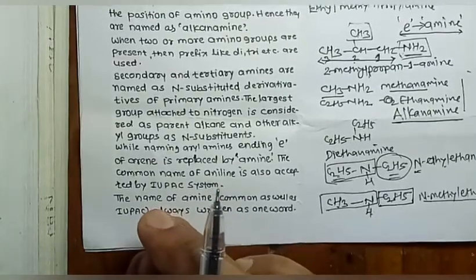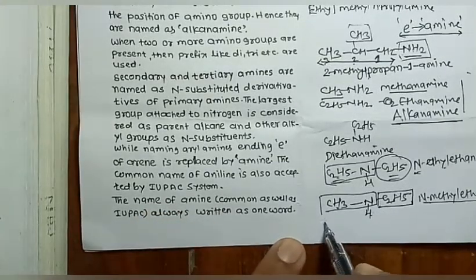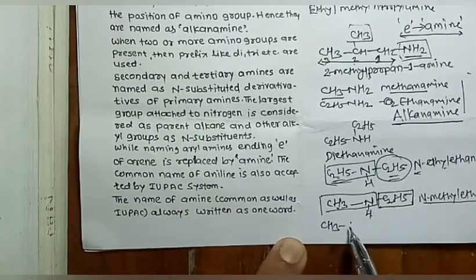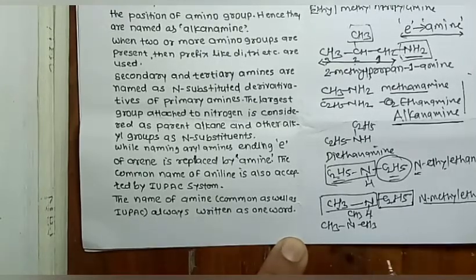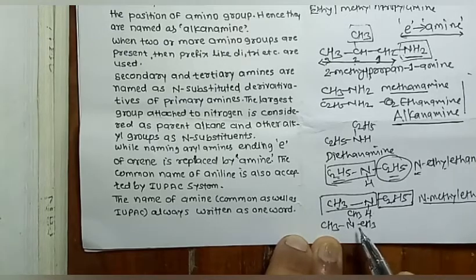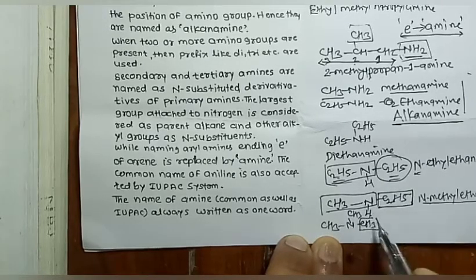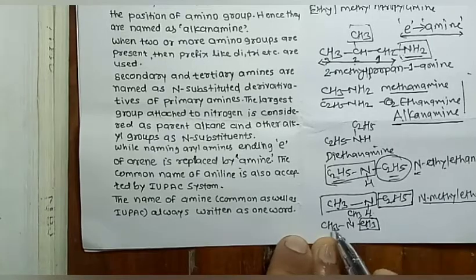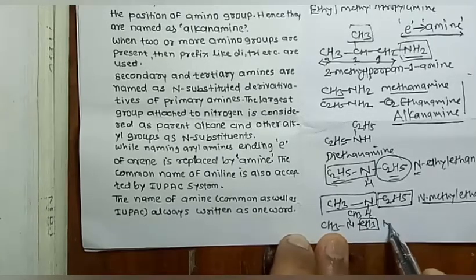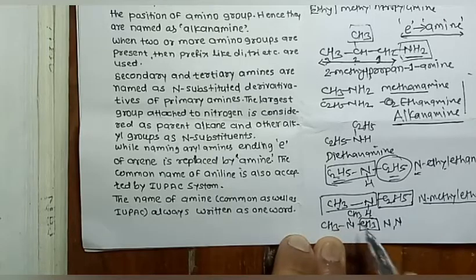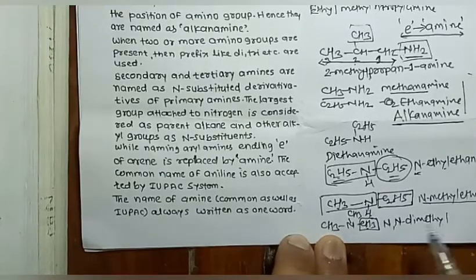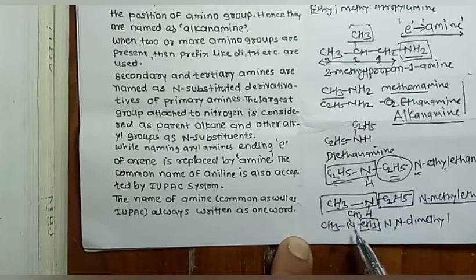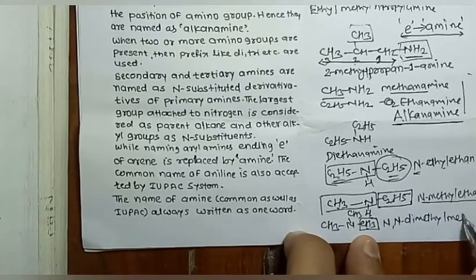For a simple tertiary amine like (CH₃)₃N, one methyl group is taken as the parent — 'methanamine' — and the other two methyl groups are N-substituents. The IUPAC name is 'N,N-dimethylmethanamine'.